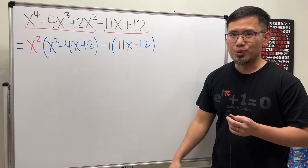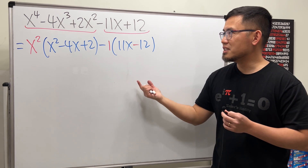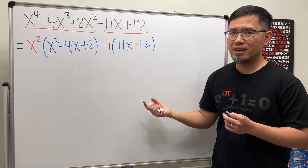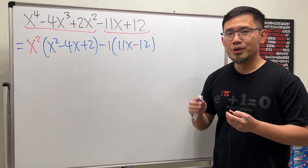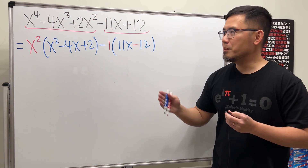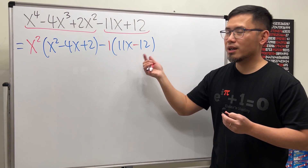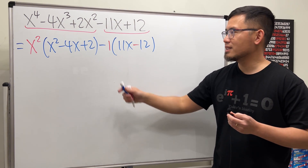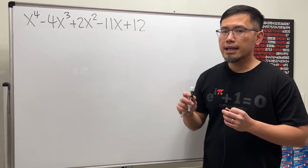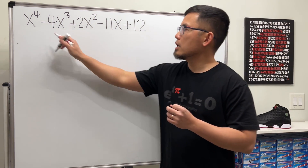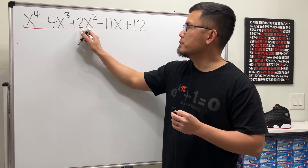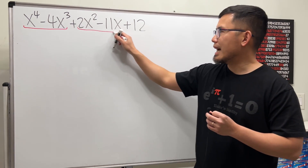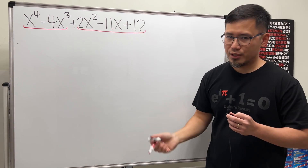So what do we do? Does this mean that this is not factorable? No. Grouping — maybe we can just try a different grouping. So let's try grouping the first two terms and then the last three terms.